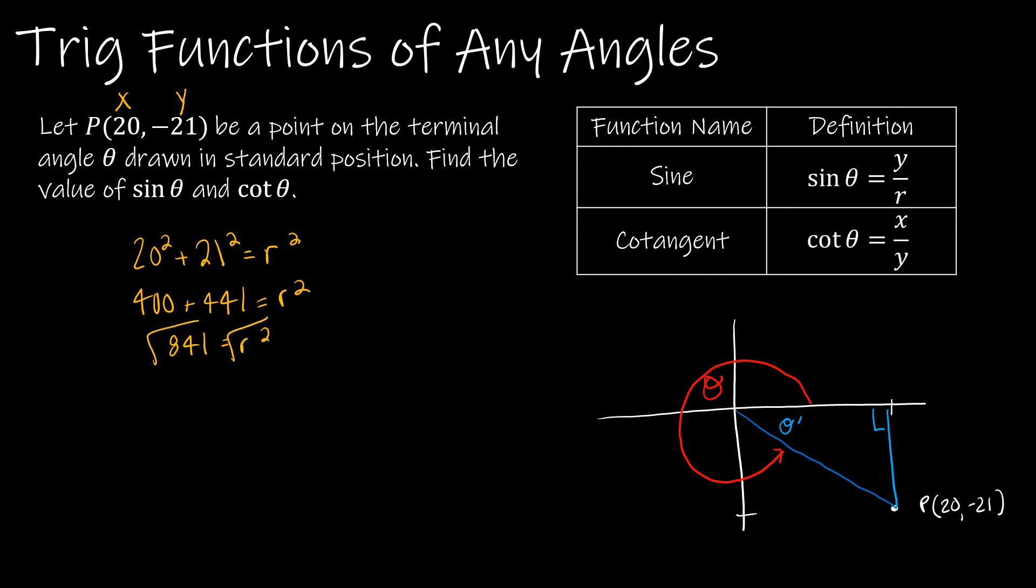But r is always positive, so even though I got plus or minus 29, I'm only worried about the positive value. Now I can find sine of theta, which is y over r, which is -21 over 29. And I can find cotangent of theta, which is x over y, so 20 over -21.